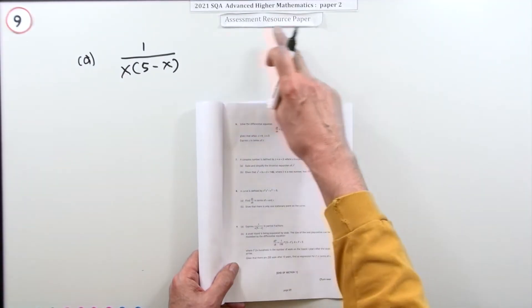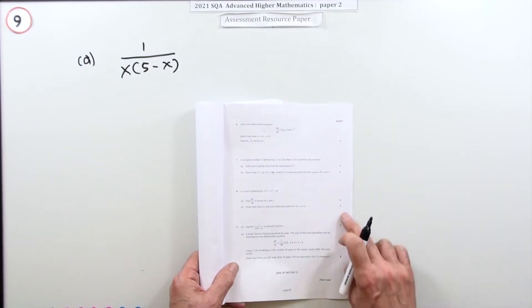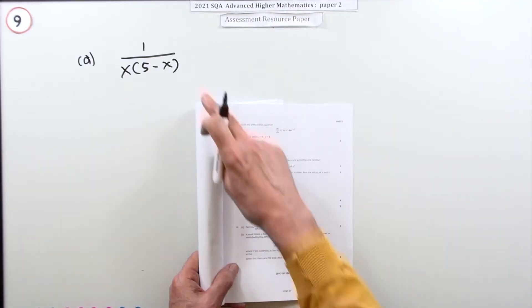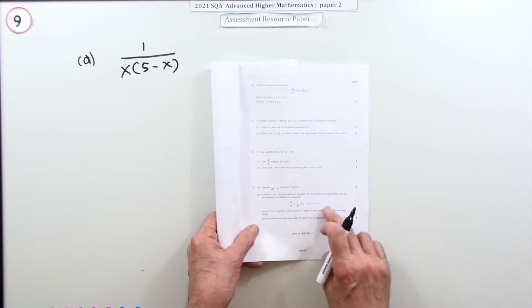So number nine then from paper two, the 2021 Advanced Higher resource paper. A big question on Denmark's this time. Part a: express that in partial fractions, presumably because you're going to be using it in part b to solve this differential equation here, which will of course require an integration.